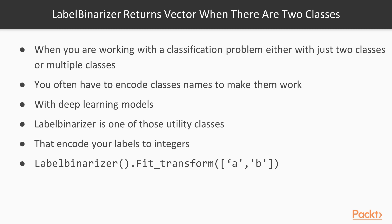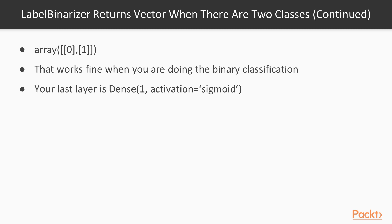LabelBinarizer is great at encoding your labels to integers. It actually works well when you have two classes, because it will return the required values you can then use with binary classification — assuming your last layer is defined as a dense layer with just one neuron and a sigmoid activation function. This is the kind of last layer we often use when we have only two classes and want to distinguish between them.